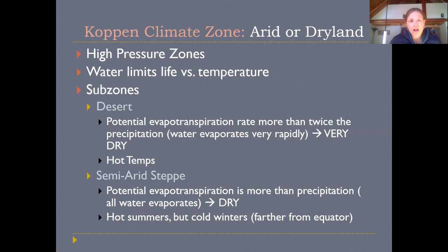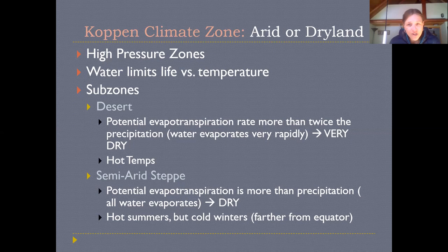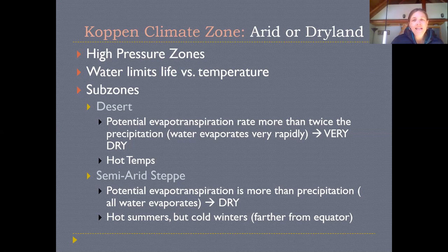In the desert area, the potential evapotranspiration is very high. Evapotranspiration is the total evaporation of water plus total transpiration of water from plants — plants pull water from the soil and evaporate it into the air, which is called transpiration. The total water loss from surfaces and from plants is evapotranspiration. Potential evapotranspiration is how much water the air could soak up. Hot, dry air is good at holding more moisture, so really hot, really dry air has a very high potential evapotranspiration.